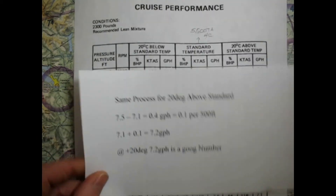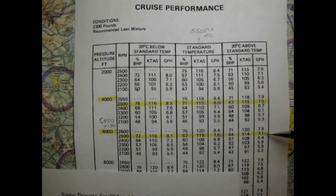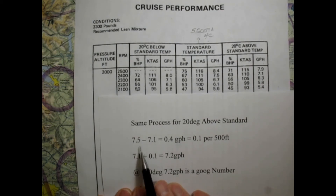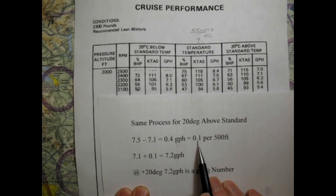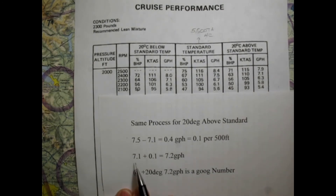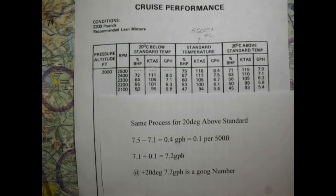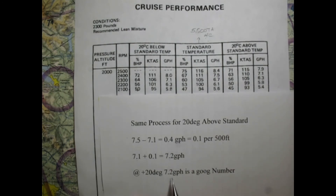We apply the same process for 20 above standard temperature: 7.5 minus 7.1 equals 0.4, so again 0.1 GPH per 500 feet. Adding 0.1 to 7.1 gives us 7.2 gallons per hour at 20 above standard temperature at our altitude.